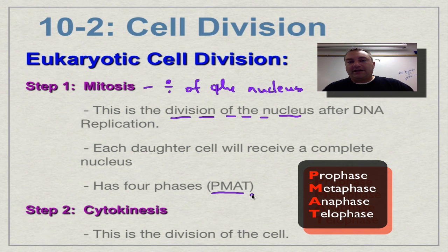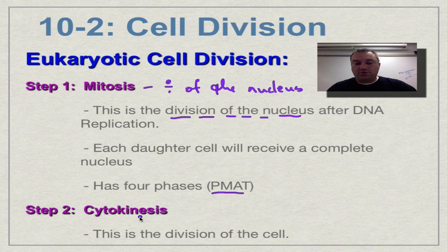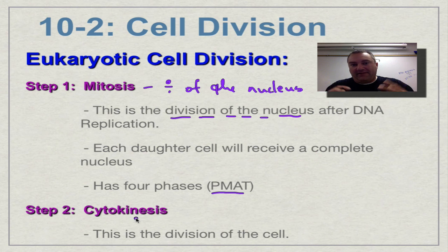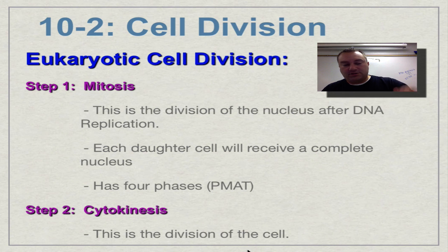The second part — which is like fission for prokaryotic cells — is called cytokinesis. The prefix 'cyto' means cell and 'kinesis' means to move. Basically the cell moves and splits in half. That's the actual division of the cell, and we'll cover the details in another screencast.